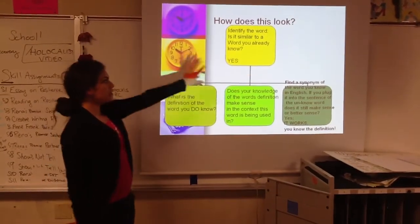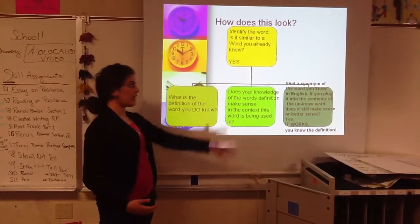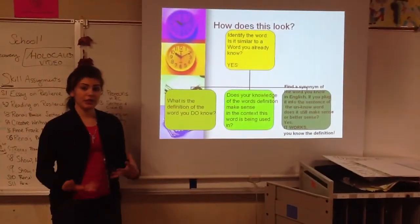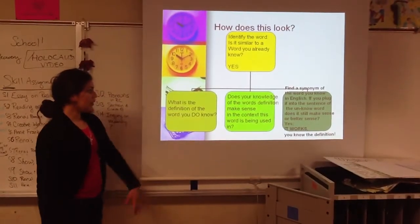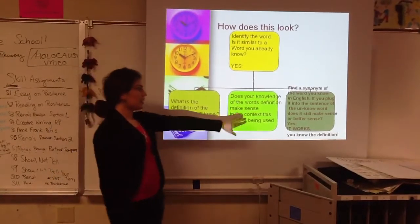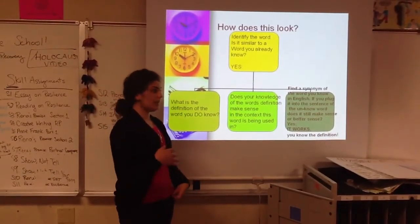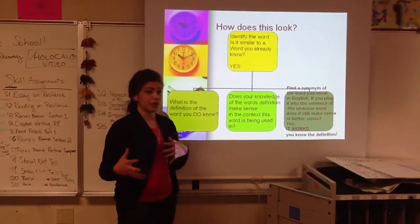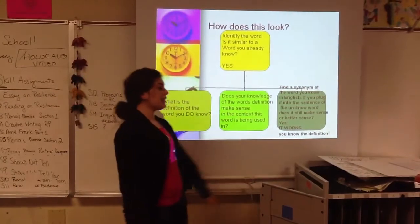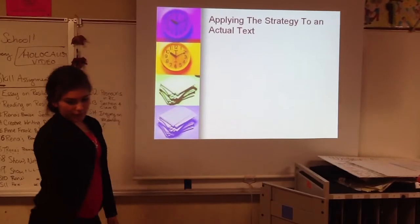What I did was a little diagram showing what I do first, what I do next, and what I do last. First, identify the word and check if it's similar to what I already know. If it is, I move on to the next step: what is the definition that I know? I think about it and ask: does it match or make sense if I plug it into the context where the unknown word appears? If it makes sense, I go to my final step and apply it.